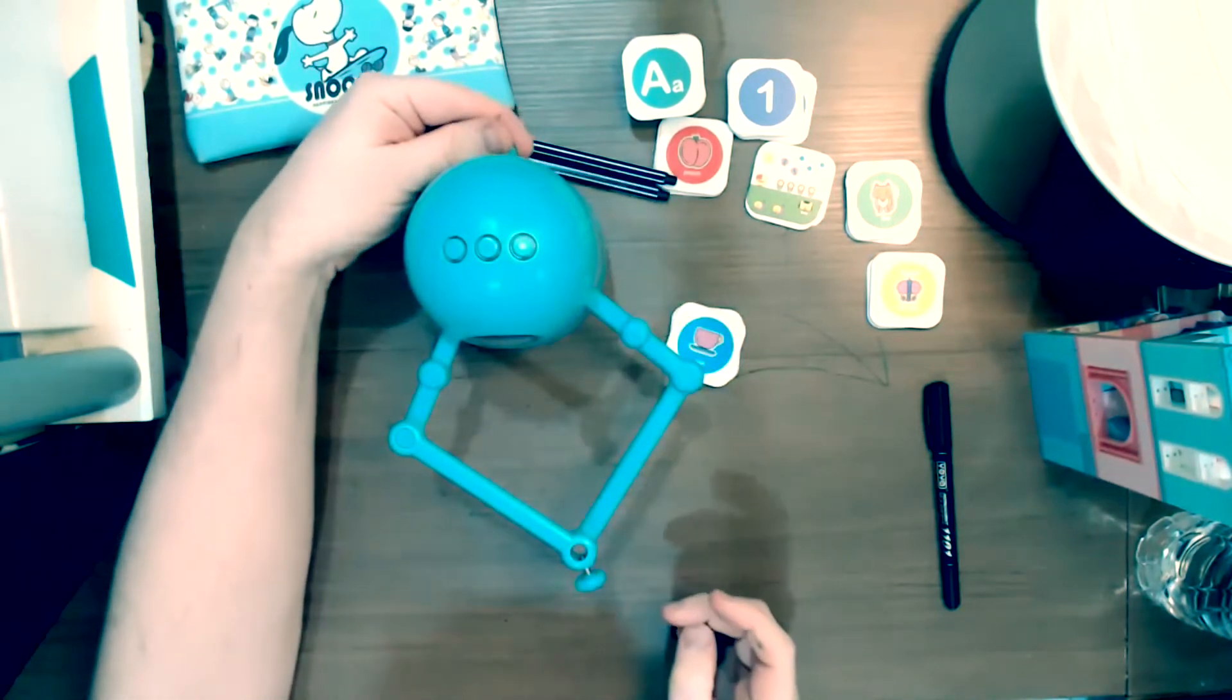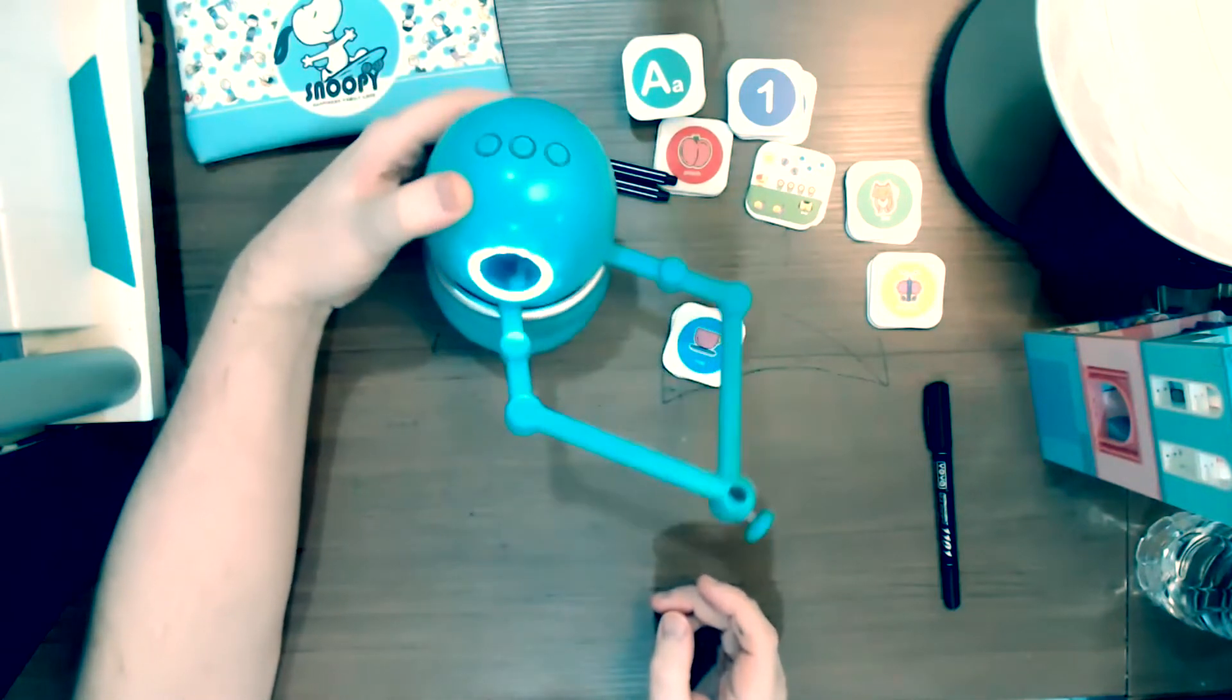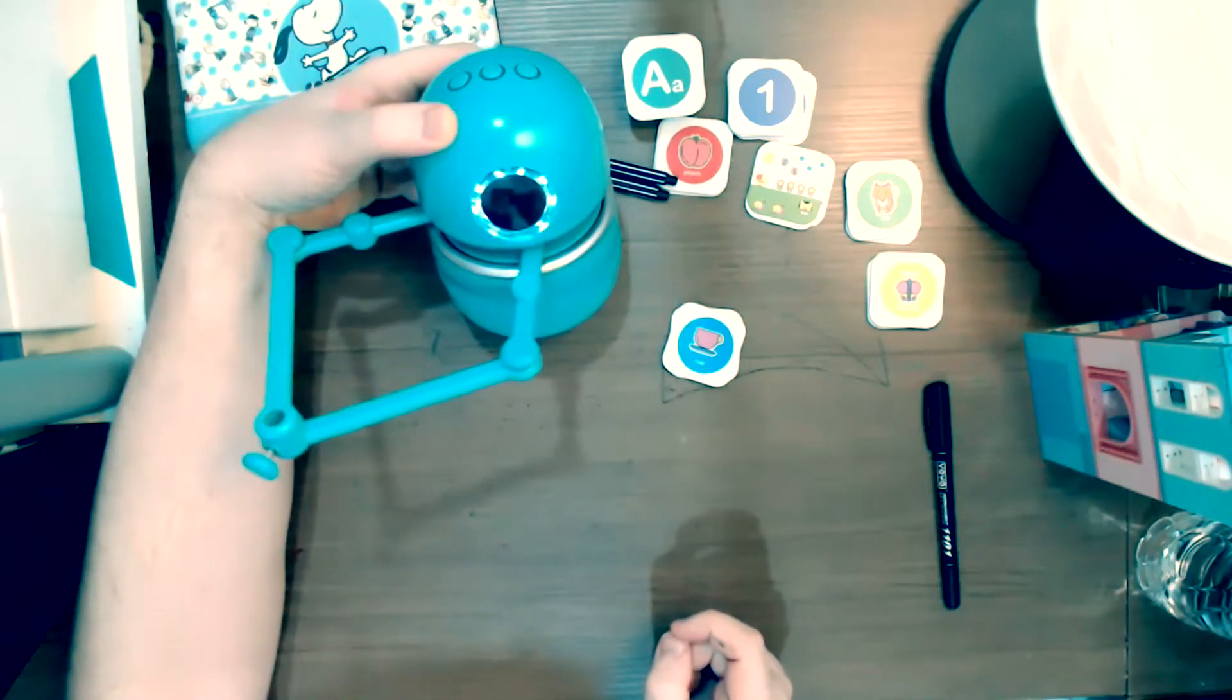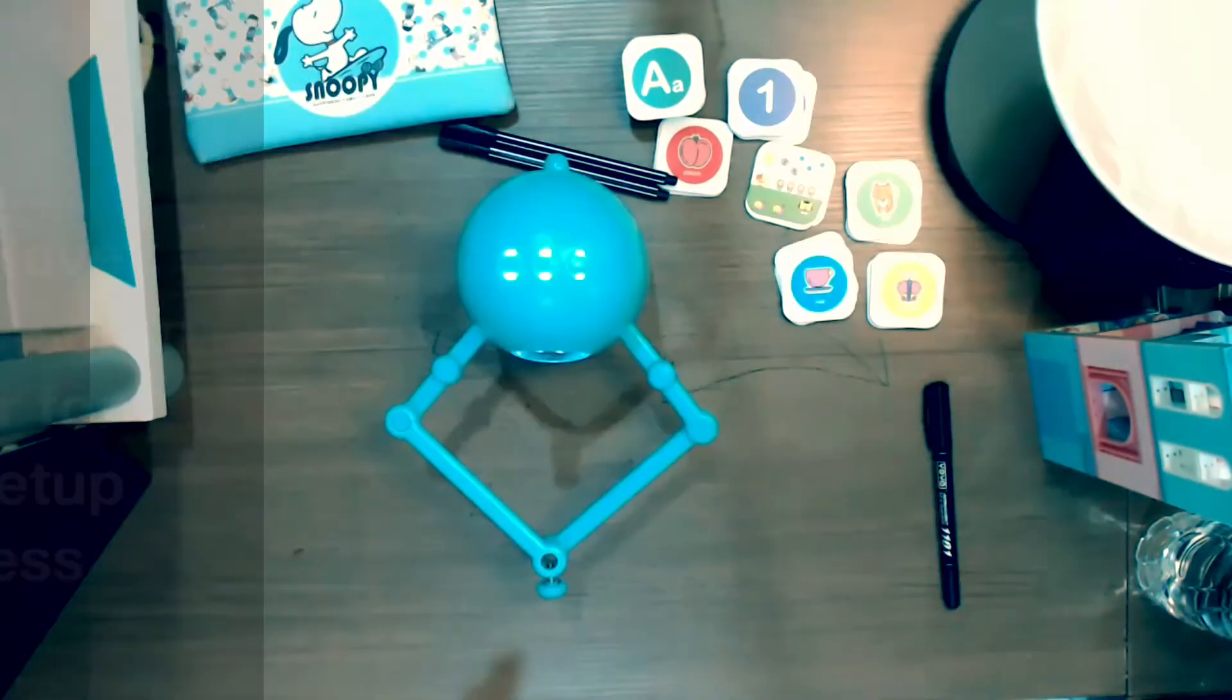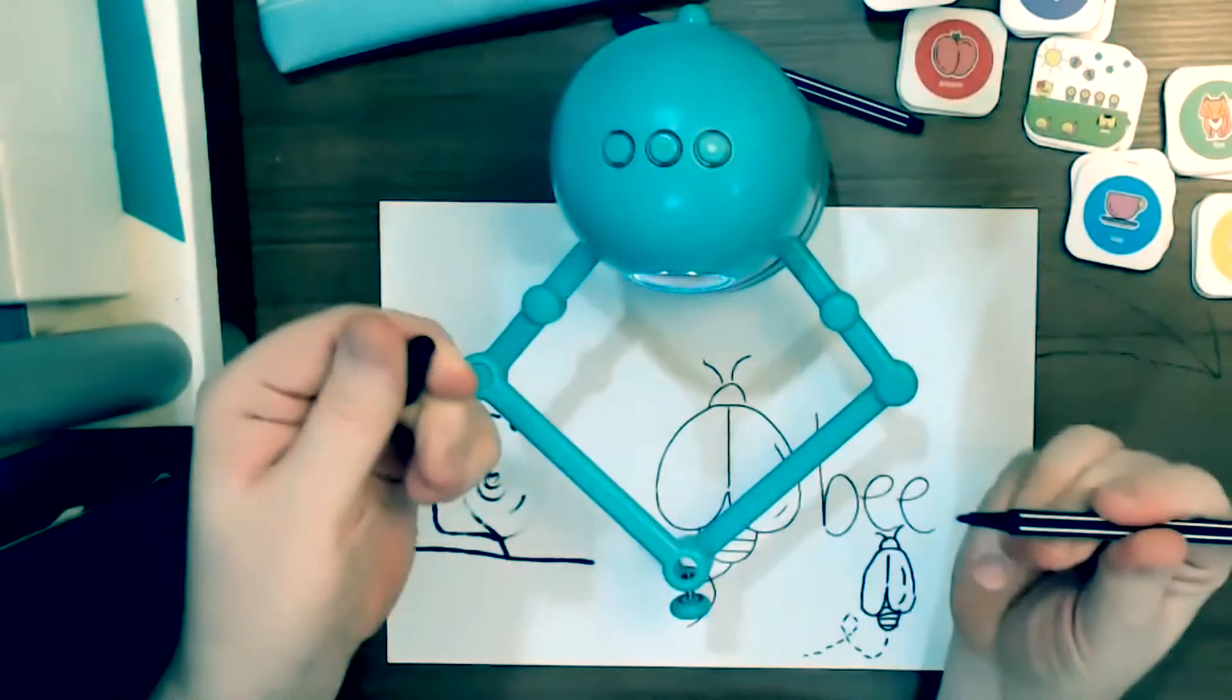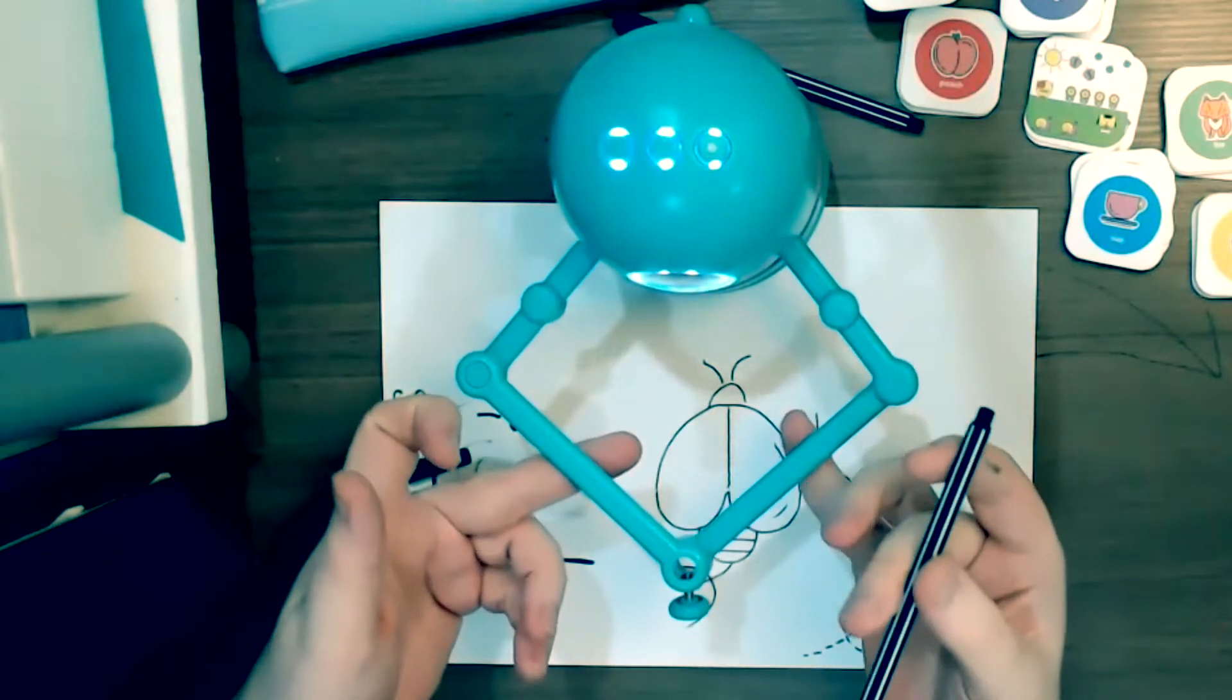When you turn Quincy on, it will then sort of flex the arms left and right. Can you help me to set up the pen? Press any button to go on when you are ready. Now this is where I recommend you have lots of scrap paper because it will take a few tries to get this right. Here's the marker. Take the lid off. And these arms do have a little bit of flex, see? They flex a little bit.